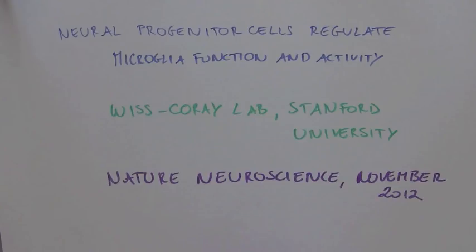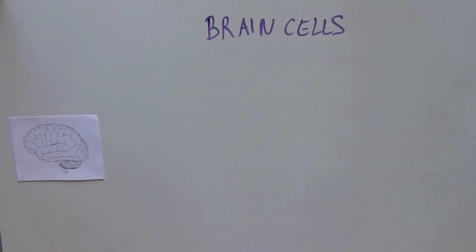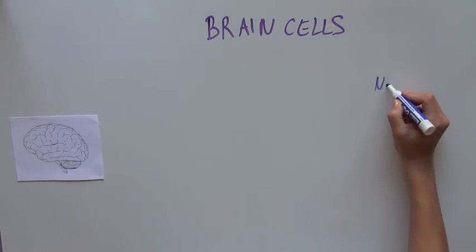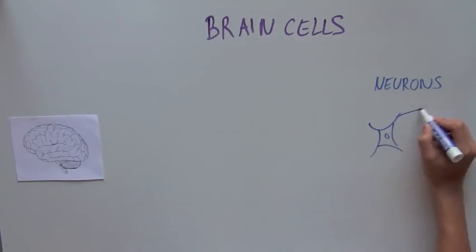To understand this finding, let's talk about a few cell types that live in our brains and where they come from. So if I asked you what cells were in our brain, you would probably say neurons, and that's absolutely true.